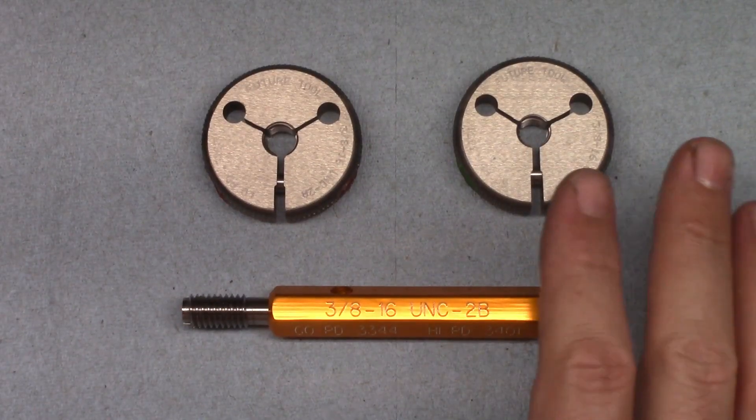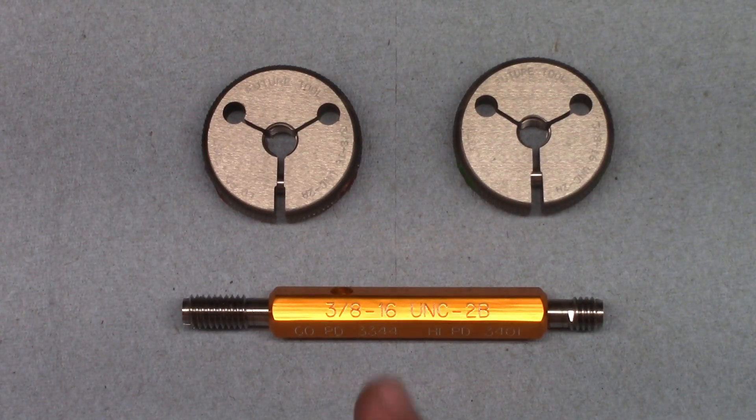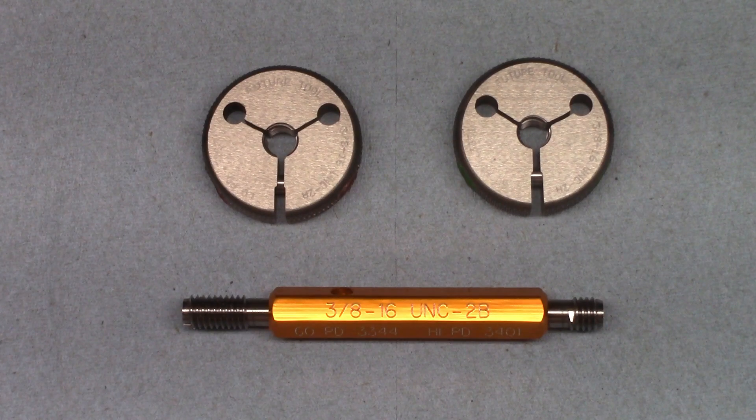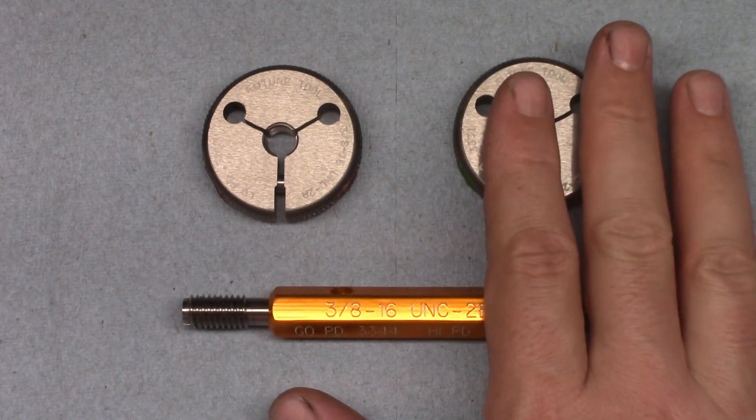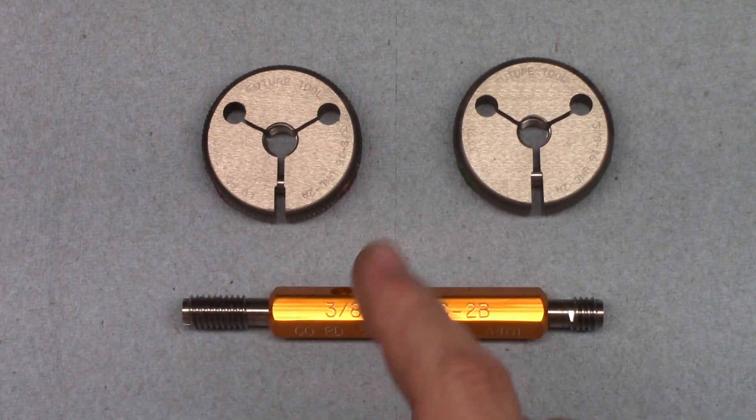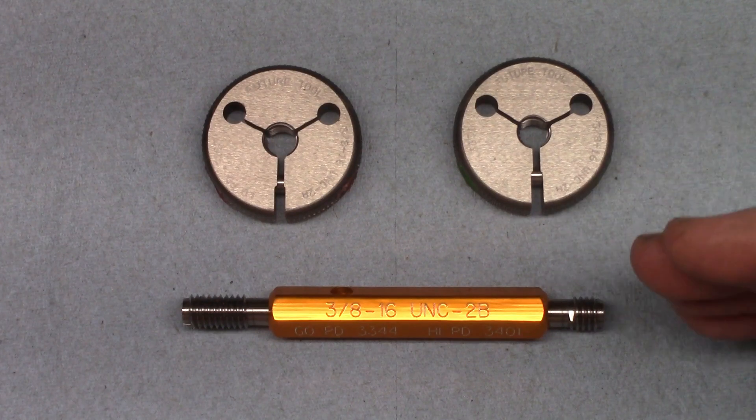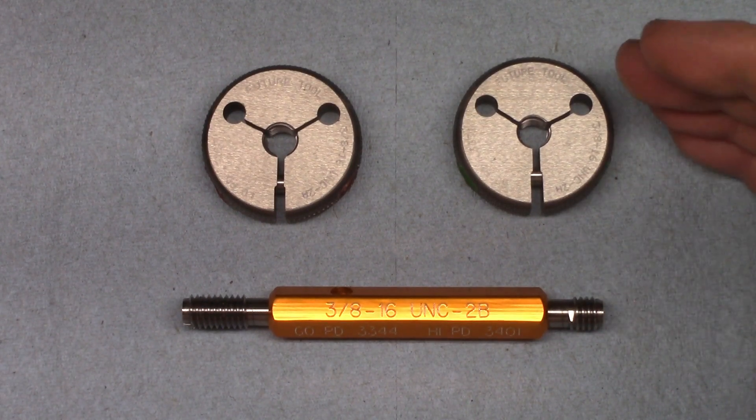Regular viewers will know that I made a video a while back about why you should not check threads with the mating part. But this is different, because these gauges are specifically made to meet the pitch diameter range of either an external or internal thread.